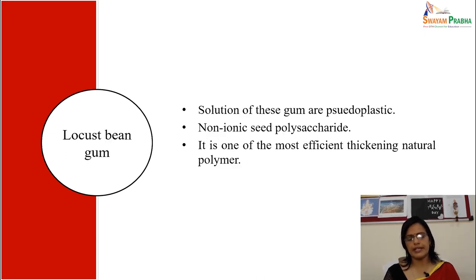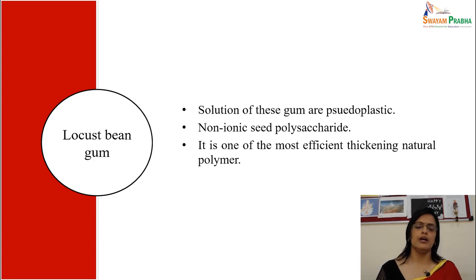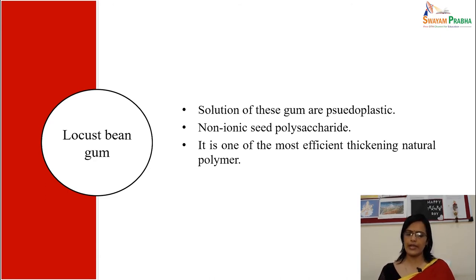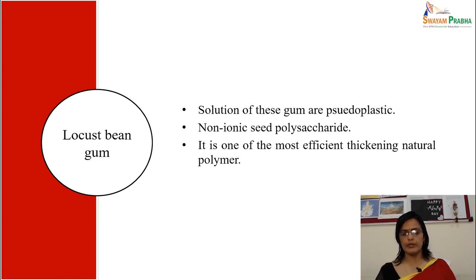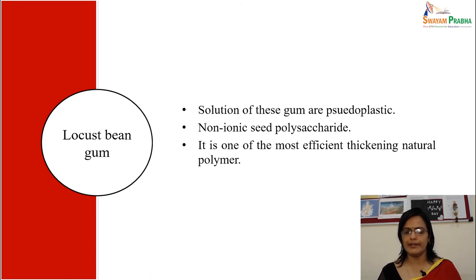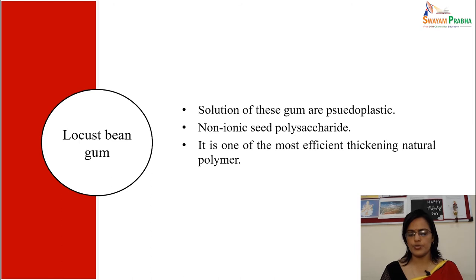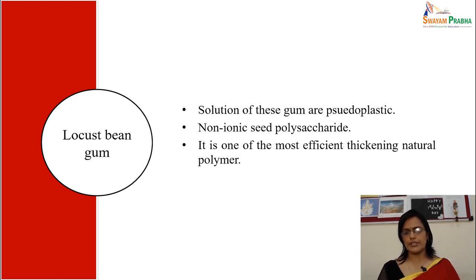Locust bean gum: solutions of this gum are pseudoplastic, non-ionic, seed polysaccharides, and it is one of the most efficient thickening natural polymers. Remember locust bean gum as an efficient thickening natural polymer used in many cosmetic preparations.